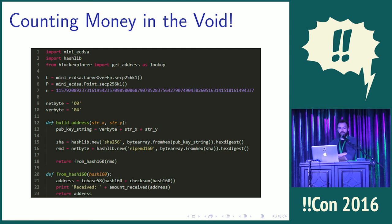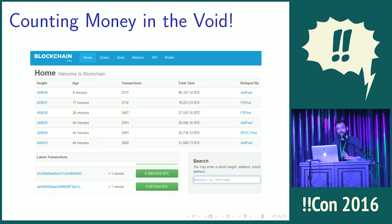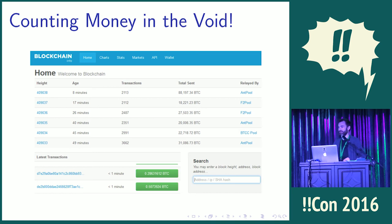I wrote some Python code to generate addresses and generated some of these invalid addresses. The website blockchain.info provides a nice API I used to query how much money has gone into these addresses. I tried to make a huge list of simple points not on the curve and send those queries, but apparently throwing millions of queries at a remote database — they call that a denial of service attack. So that did not go so well.